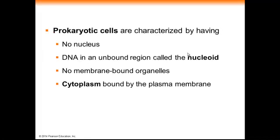Prokaryotic cells are characterized by having no nucleus. The prefix pro means before, and the term karyo means nucleus, so we would say that these cells are before a nucleus. They do contain DNA in a region called a nucleoid. They do not have any membrane-bound organelles, and that's one of the primary characteristics of prokaryotic cells. They do contain cytoplasm, which is similar to the cytosol — the fluid inside the cell — and it is bounded by a plasma membrane.